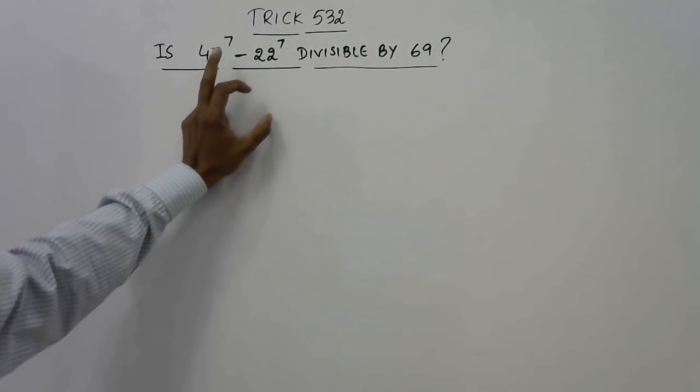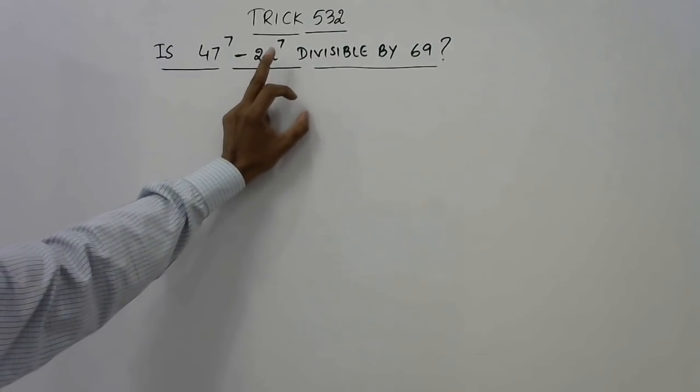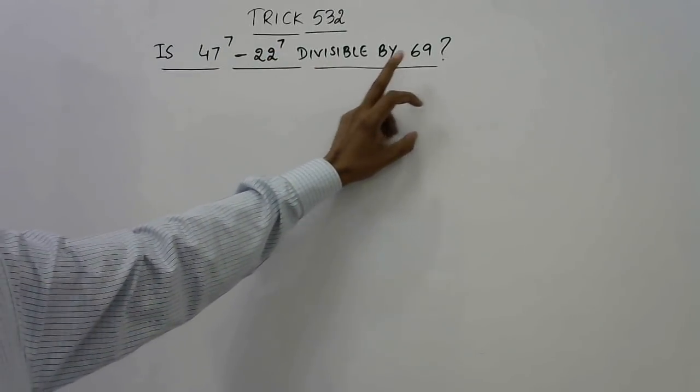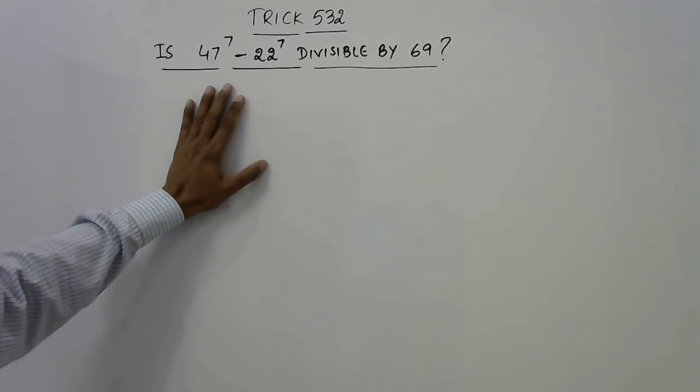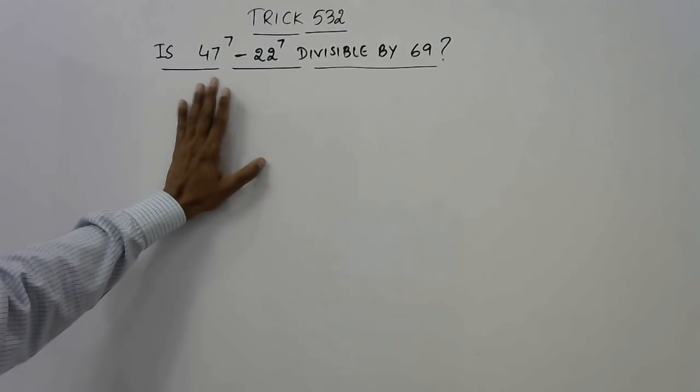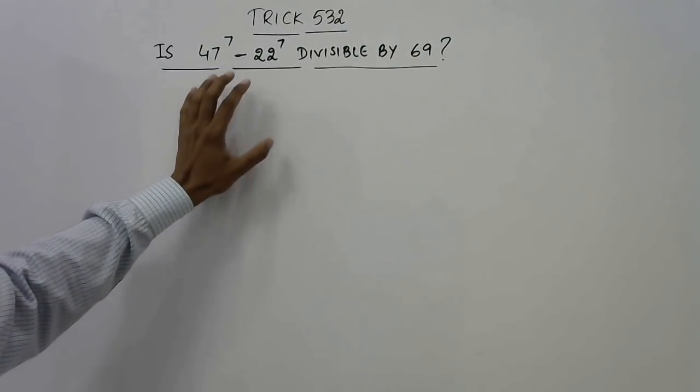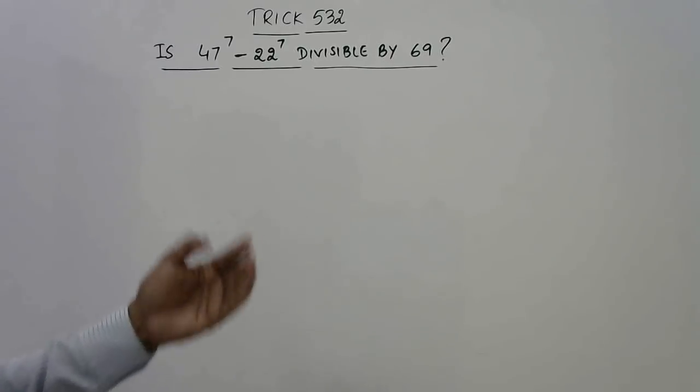Is 47 power 7 minus 22 power 7 divisible by 69? Well, if you don't know the concept how to find this, this cannot be solved. Moreover, these types of questions if you know the concept can be solved within two to three seconds only. Yes, that is the beauty of mathematics when you are aware of the concepts.